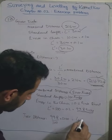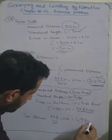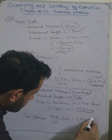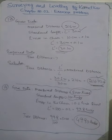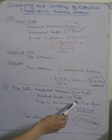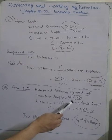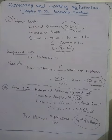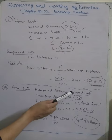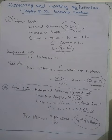Solving the equation gives 4990 links. Since the chain was shorter than the standard length, the measured length is greater than the true length. This is called a positive error, and the correction will be negative.